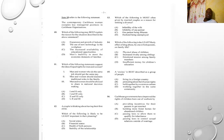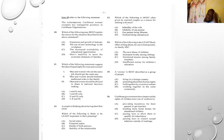Number twelve: a couple is thinking about having their first child. Which of the following is likely to be the least important in their planning? A) social status, B) financial status, C) health of both parents, D) stability of the relationship. The answer is A) social status — a repeated question and quite obvious.